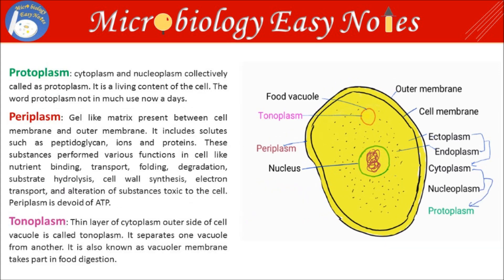Protoplasm: cytoplasm and nucleoplasm collectively are called protoplasm. It is the living content of the cell. The word protoplasm is not in much use nowadays.